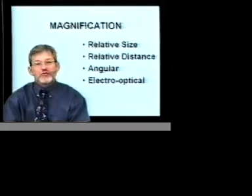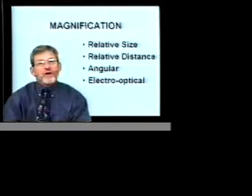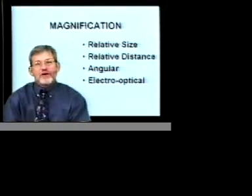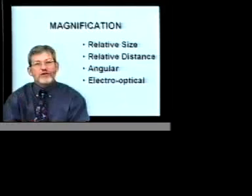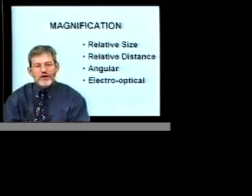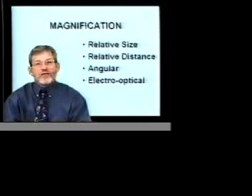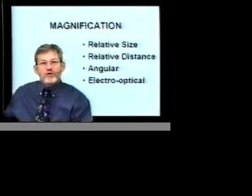To review briefly and in conclusion, there are four types of magnification. We can magnify size by physically making an object larger. We can magnify through distance by bringing it closer and providing optics to focus it at that close distance. We can provide magnification through angular strategy, as in a telescope. And lastly, we can provide magnification through an electro-optical system, also known as a closed-circuit television. Thank you.